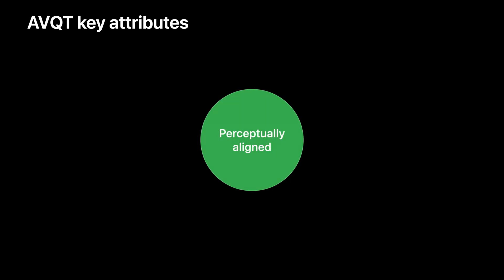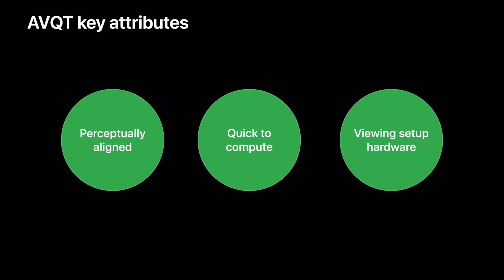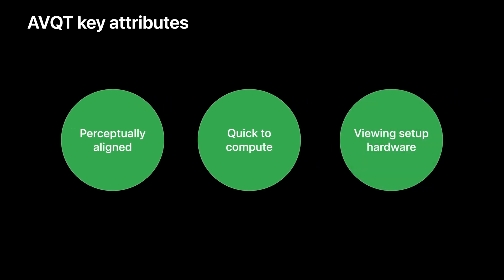We want to discuss three key attributes of AVQT that make it very useful across applications. First, we will see how well AVQT aligns with human perception. Then we will talk about AVQT's computational speed. And finally, we will show why viewing setup awareness is important when predicting video quality.